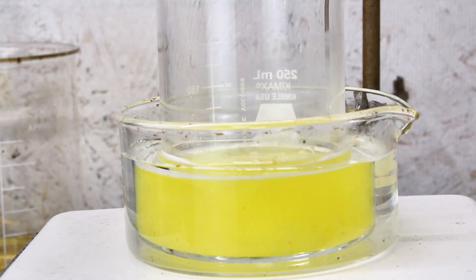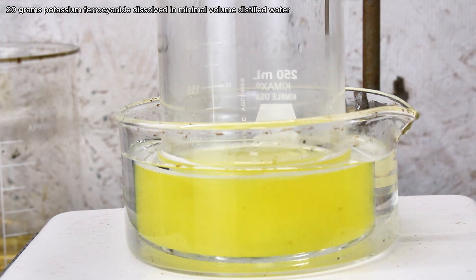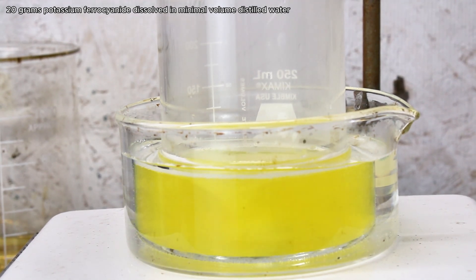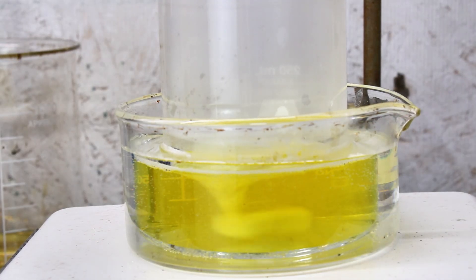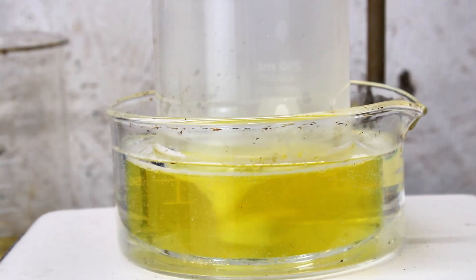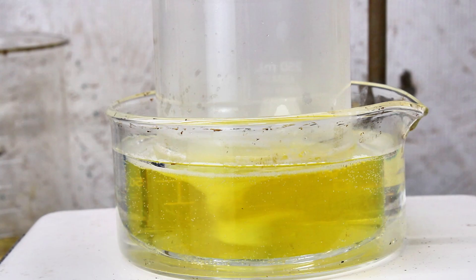To make sodium nitroprusside, I begin by dissolving 20 grams of potassium ferocyanide in 30 milliliters of water. This was taking a while to dissolve, so I went ahead and placed the beaker in a hot water bath and heated it to 90 degrees Celsius with constant stirring until all the ferocyanide had dissolved and the solution was a clear yellow color.